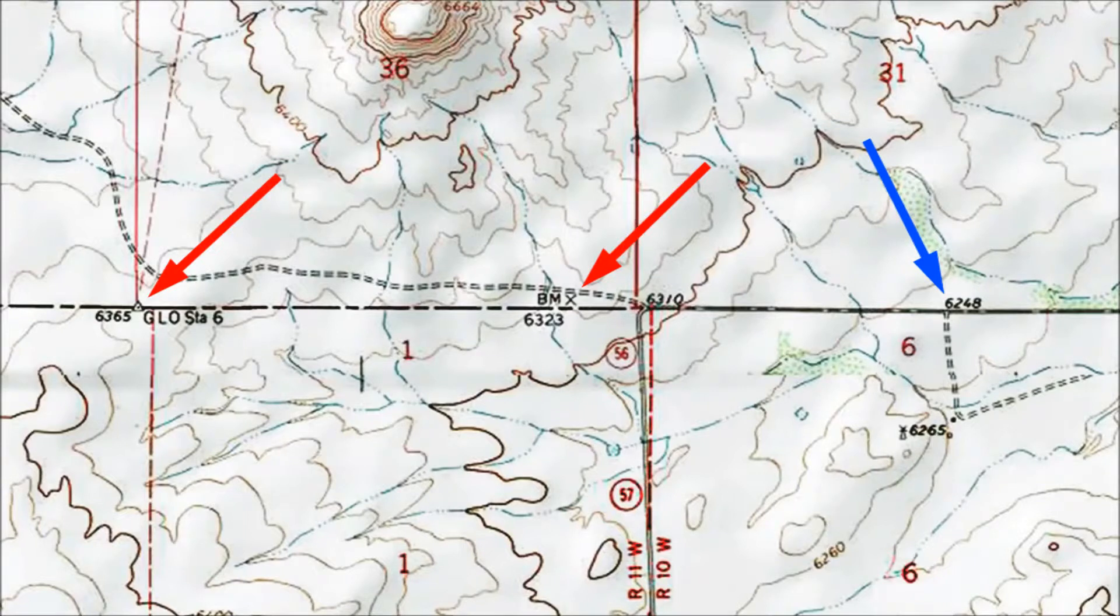Now look at the elevation marked by the blue arrow. There's no x or triangle or BM, just an intersection and a road. If you don't see the intersection, don't worry, we'll get to that in a later video. Meanwhile, the map is telling you that if you stand in the intersection, your elevation is 6,248 feet. You won't find a survey marker, just the road intersection.